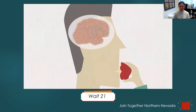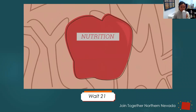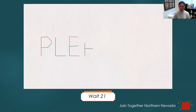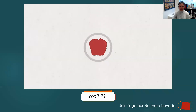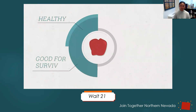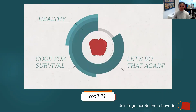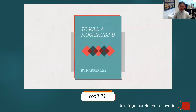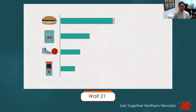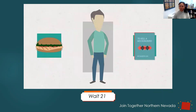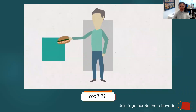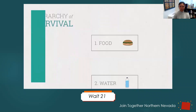When you bite into an apple, your brain says 'yum.' It recognizes the apple is good for you — it has nutrition, vitamins, and gives your body energy to survive. Whenever the brain recognizes something good, it releases a chemical called dopamine, which causes you to experience pleasure. The brain releases dopamine to teach the body that something is healthy and to remember to do it again. The brain creates a hierarchy of survival which ranks how important each thing is to your survival.